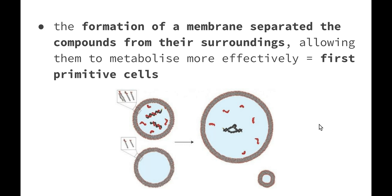To metabolize effectively, complex organic compounds needed to separate from their surroundings and form membranes, which would have resulted in the first primitive cells.